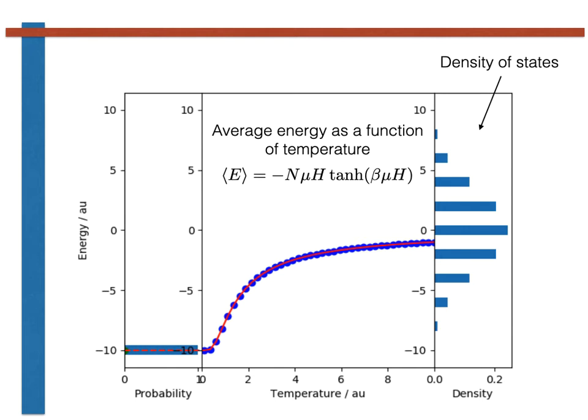On the left, I have then shown the probability of having each value of the energy at a particular temperature. I have evaluated this distribution using the expression shown here, which comes from our understanding of the canonical ensemble.